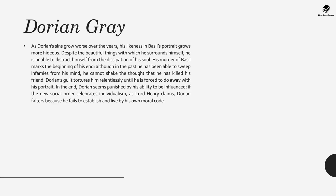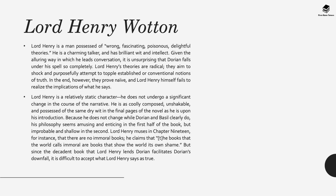As his sins grow worse over the years, his likeness in Basil's portrait grows more hideous. Despite the beautiful things he surrounds himself with, he's unable to distract himself from the dissipation of his soul. His murder of Basil marks the beginning of his end. Although in the past he's been able to keep infamies from his mind, he can't shake the thought that he's killed his friend. His guilt tortures him relentlessly until he's forced to do away with his portrait. In the end, Dorian is punished for his inability to be truly individual. If the new social order celebrates individualism, as Lord Henry claims, Dorian falters because he fails to establish and live by his own moral code.